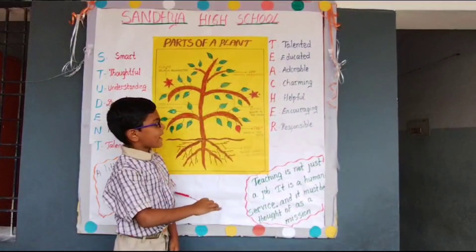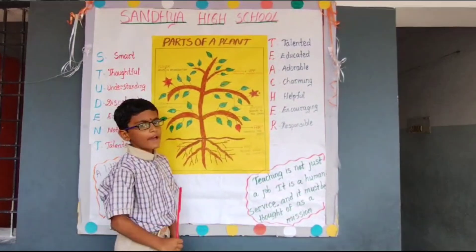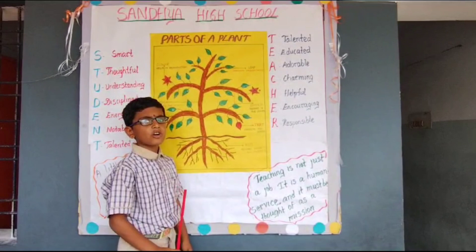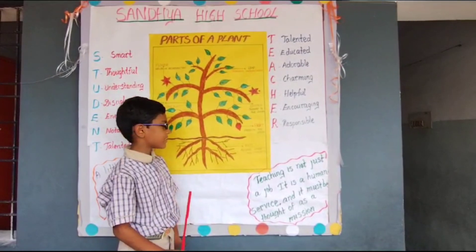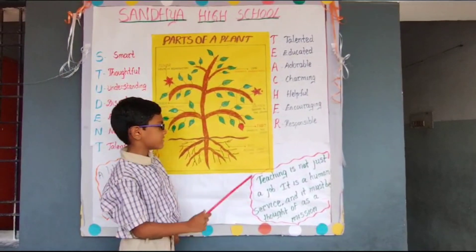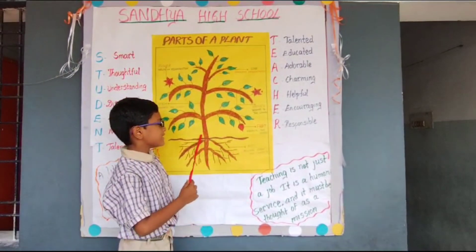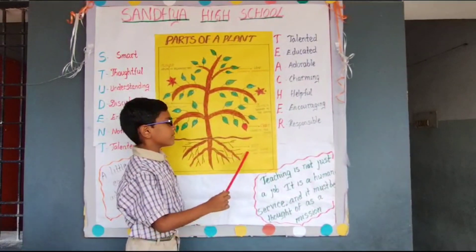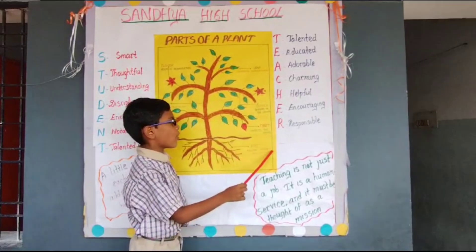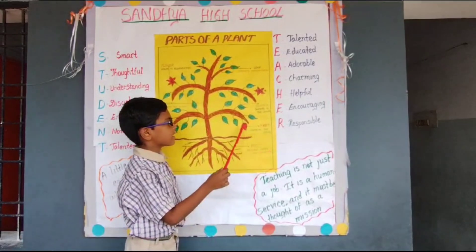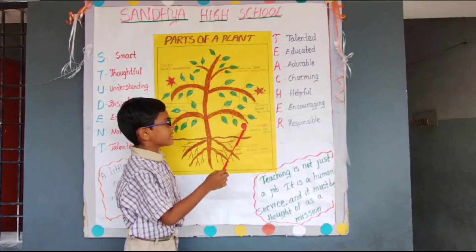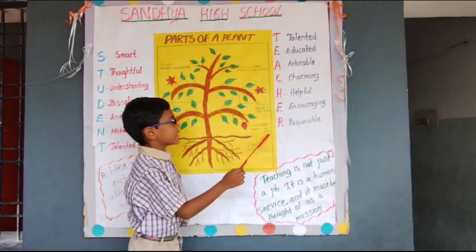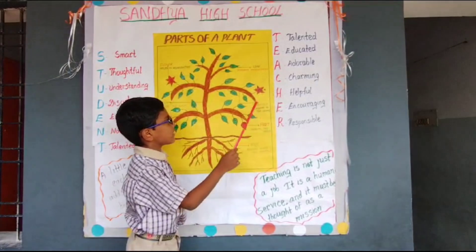This is a plant. I am going to tell about the parts of a plant and how we use it. These are roots — they absorb water and minerals. This is a fruit — it protects the seeds.